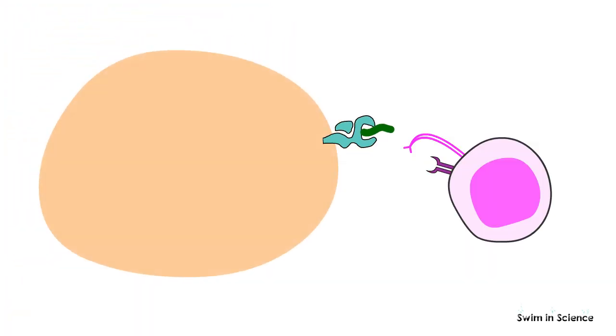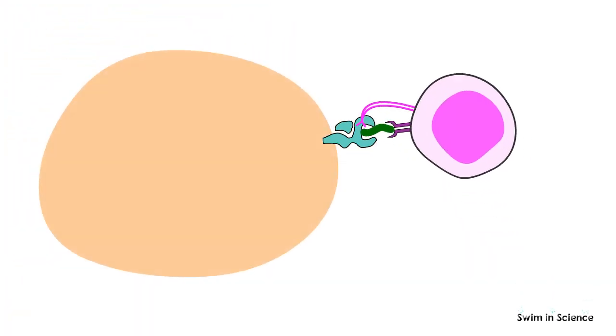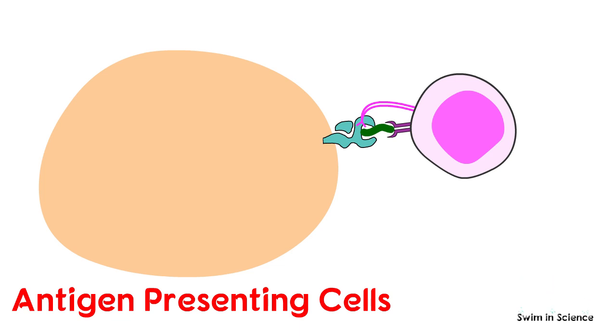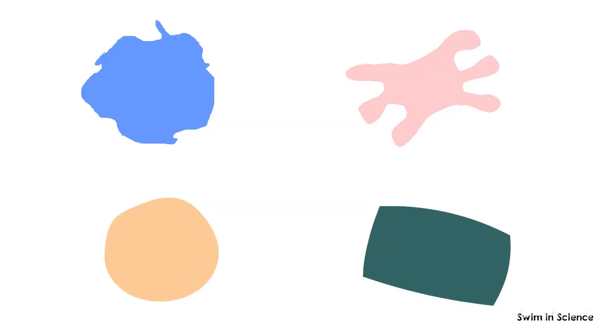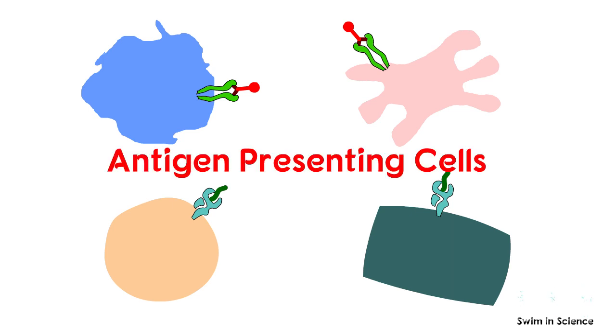The cells presenting peptide antigens to T-cells are generally termed antigen-presenting cells. Since all cells of the immune system expressing either class 1 or class 2 MHC molecules can present peptides to T-cells, they all could be designated as antigen-presenting cells.